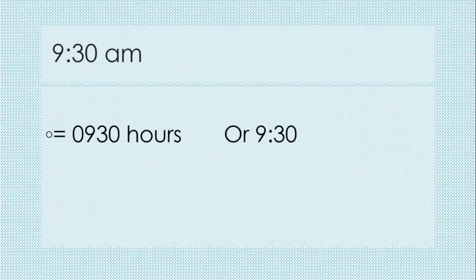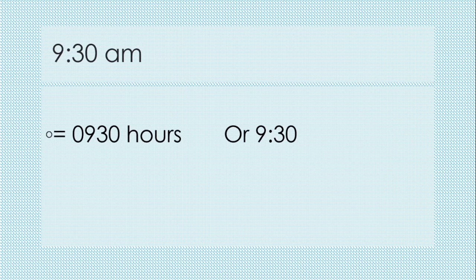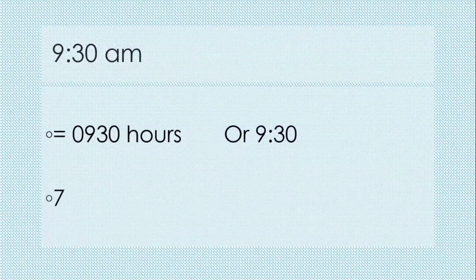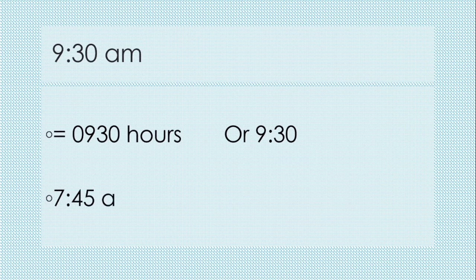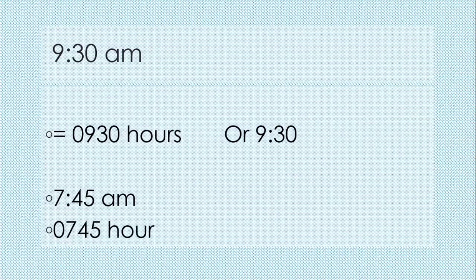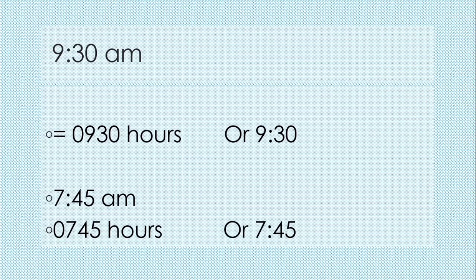Convert 9:30 AM into 24 hour clock time. We will write 09 as hours and 30 as minutes. So the answer will be 0930 hours or 09:30. Similarly, 7:45 AM will be written as 0745 hours or 07:45.